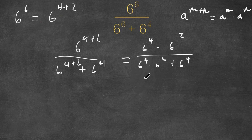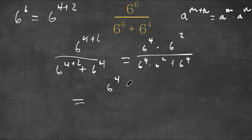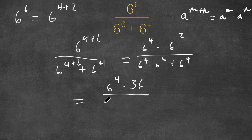Now I'm going to simplify this a little. For our numerator, 6 squared is the same thing as 36, so I have 6 to the power of 4 times 36. For our denominator, I'll simply factor out 6 to the power of 4. So I have 6 to the power of 4 times — 6 to the power of 4 times 6 squared divided by 6 to the power of 4 is simply 6 squared.